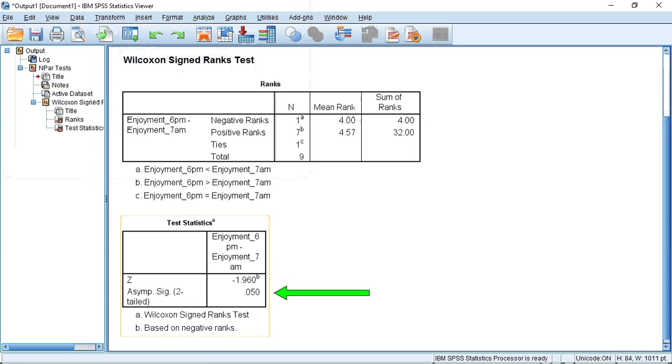Asymptotic simply means that SPSS is assuming that your sample size is adequate. This figure of 0.050, which is equal to the generally accepted boundary between significance and non-significance, and therefore we cannot reject the null hypothesis, and thus can conclude there is no significant difference between the median chocolate enjoyment ratings at 7am compared to 6pm.